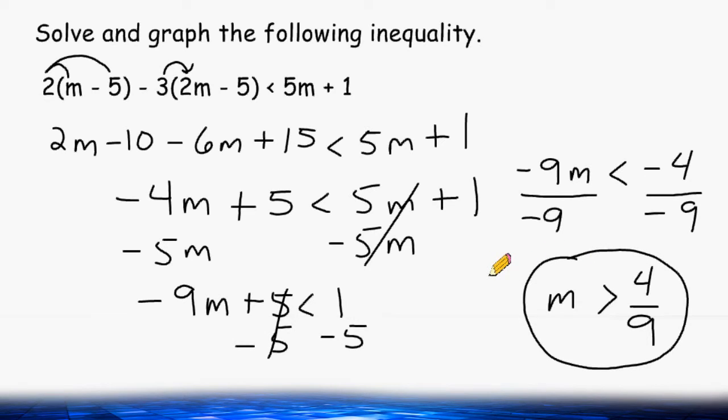Now we still have to graph our inequality, so let's start by making a number line. Let's just draw a line right there, and on either side of it we have to draw an arrow. And positive 4 ninths is somewhere in between 0 and positive 1. So I could just put a 0 here, a 1 here, and a negative 1 right here.